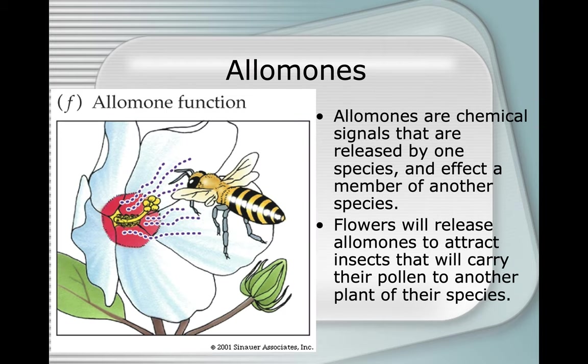Alamones are how flowers get bees, bats, and butterflies to be attracted to them and carry pollen from one flower to the next. That's how plants function. If it wasn't for bees and insects, plants would have a difficult time — they'd have to hope the wind was blowing in the right direction in order to pollinate.